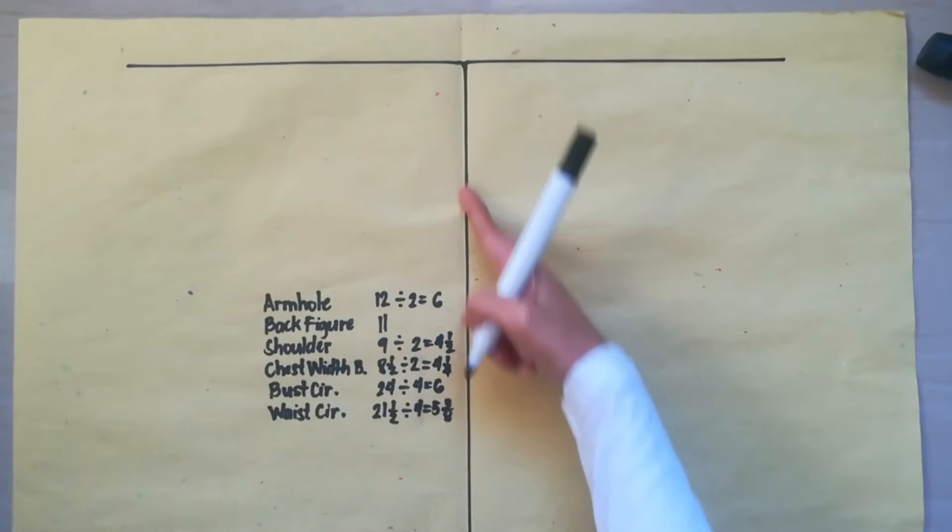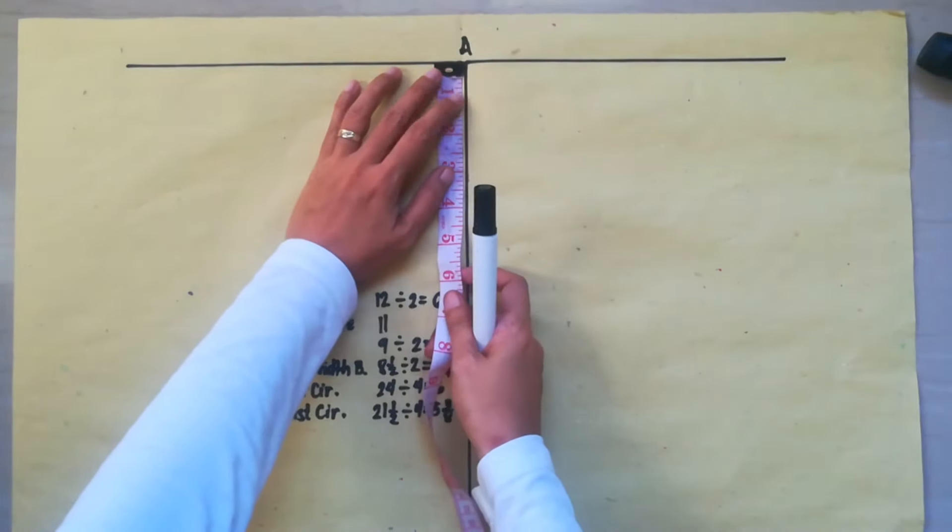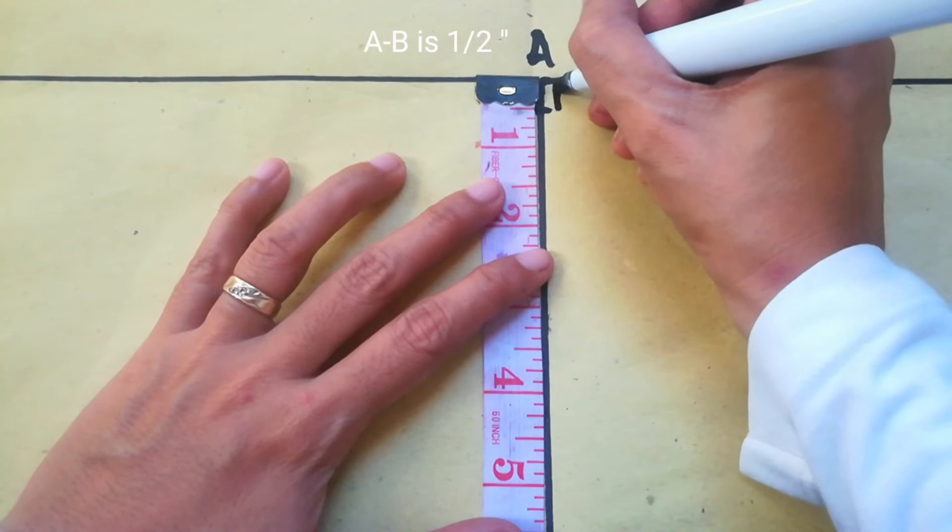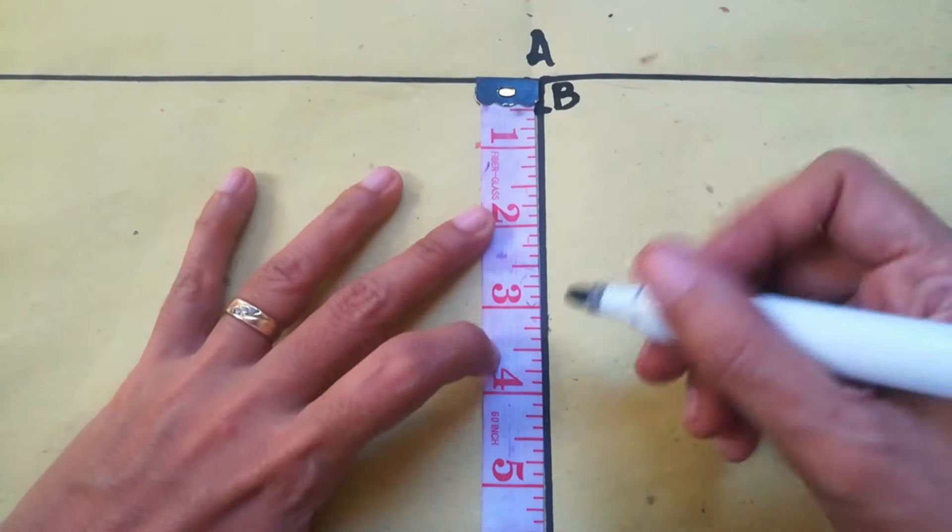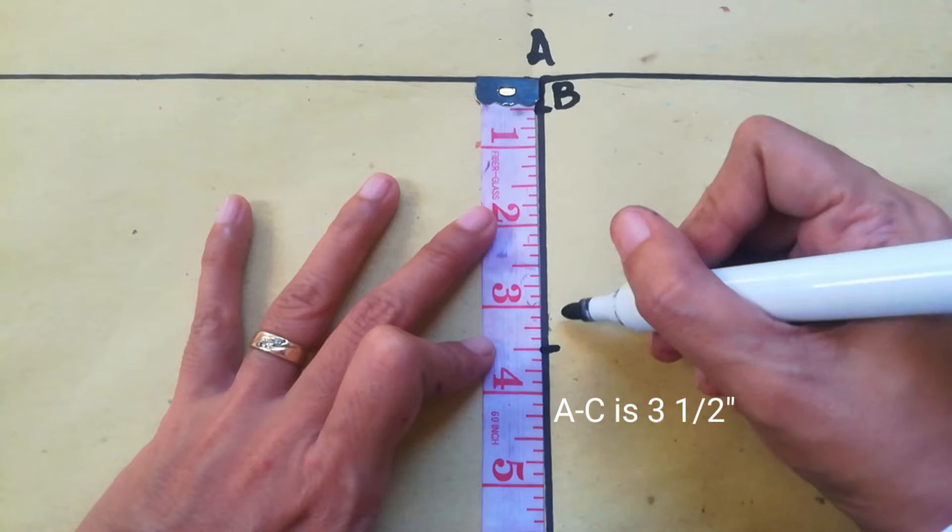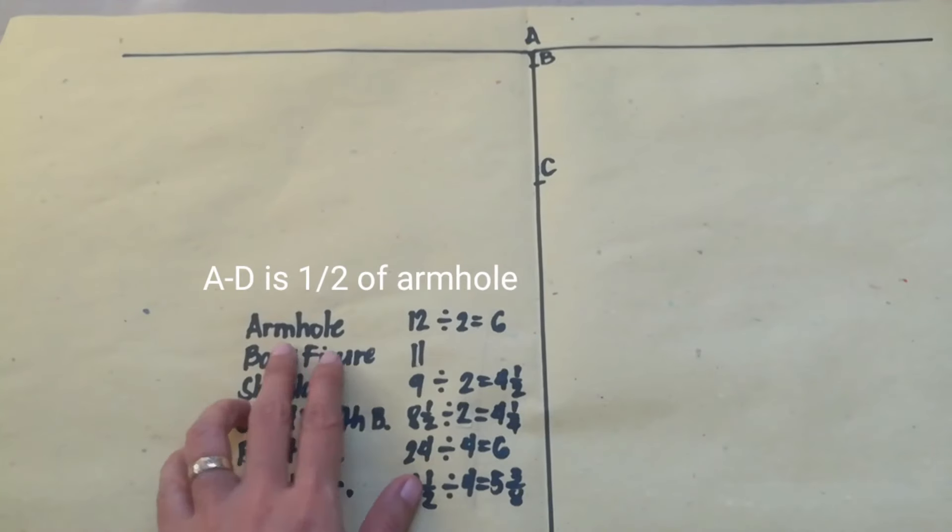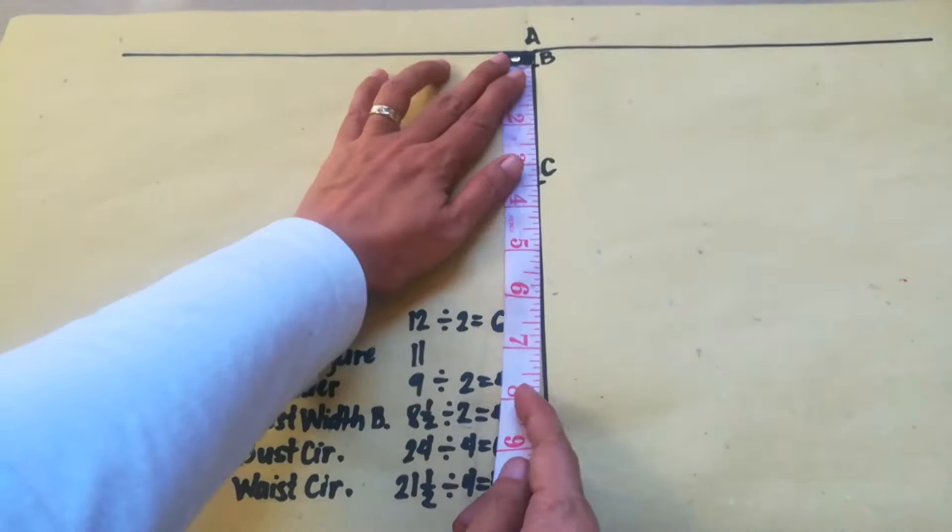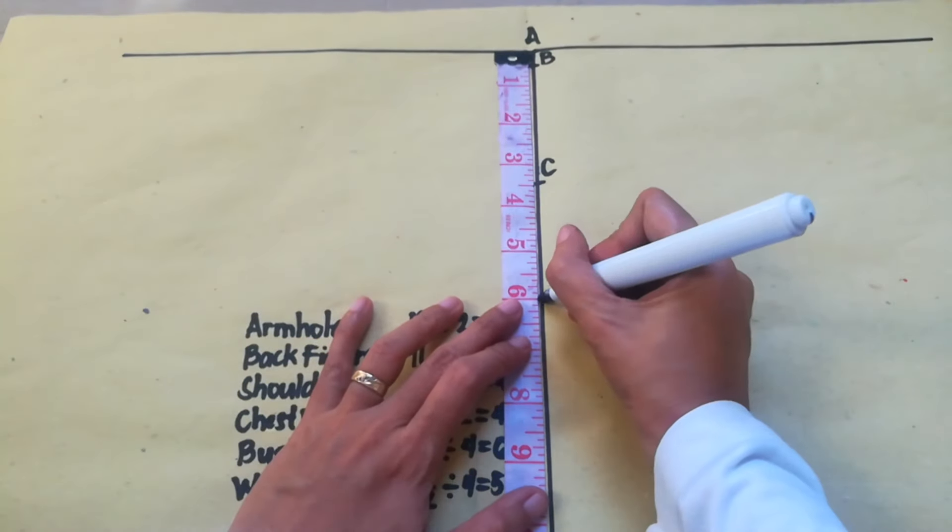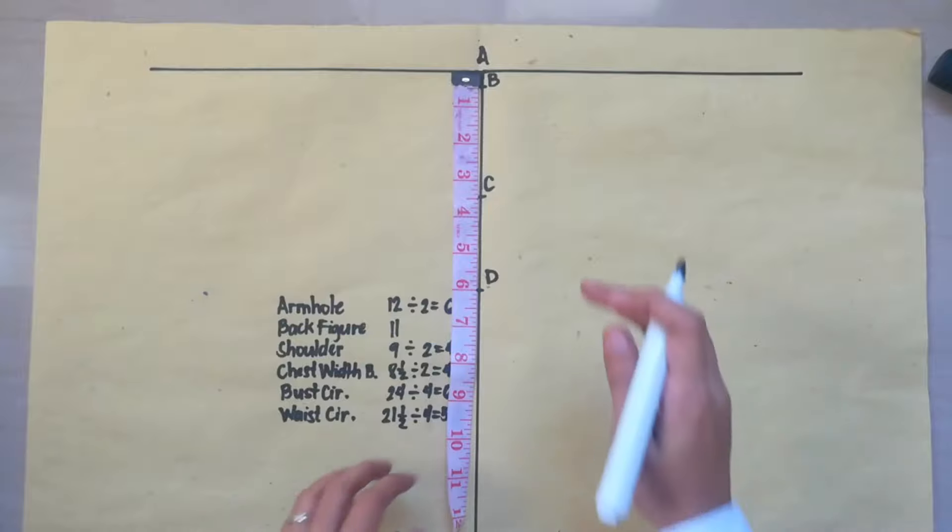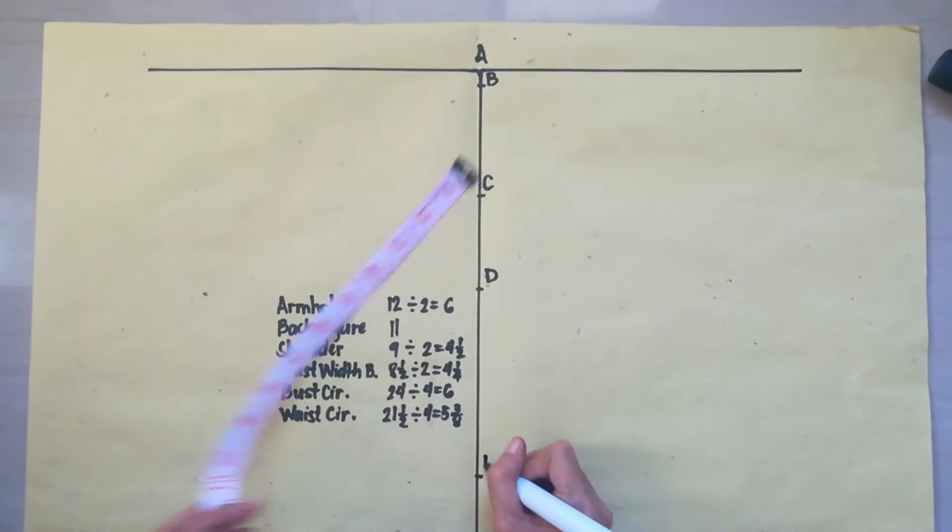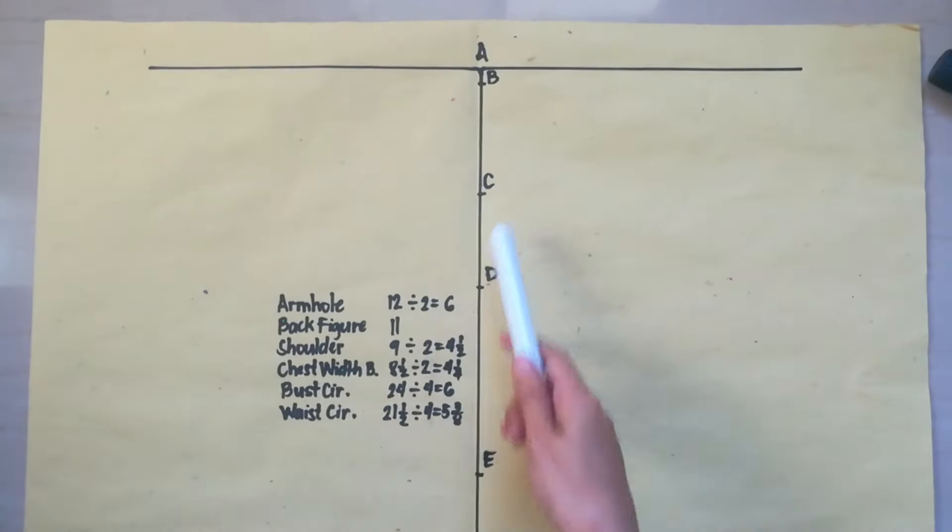In this corner, mark it point A. And then, from A, measure 1 half inch. Point B. A to C is 3 and 1 half inches. And that is point C. Then, A to D is 1 half of armhole. So, in my example, 12, so it is 6 inches. That is point D. Now, A to E is back figure measurement. So, it is 11 inches. And mark it point E. Now, extend point A and C, D and E. Make sure that these lines are parallel.